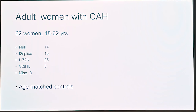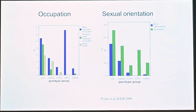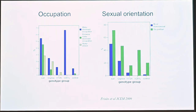We also looked at adult women with CAH — 62 women distributed across different genotype groups. We examined what they were working with — occupation. If they had a male-dominant occupation, defined as less than 25% women, shown in the blue bars, at least two were civil engineers. For extreme male-dominant occupations with less than 12% women, the pattern held: more common in the severe form, less in the milder forms, and none in the mildest.